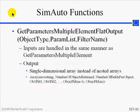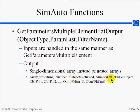You can also use get parameters multiple element flat output to return the results in a single dimensional array. In this case, the array returned includes the error string, the number of objects returned, the number of fields per object, and then the values of the fields themselves. You would have to parse the results that come back in this array in order to figure out which one is which.